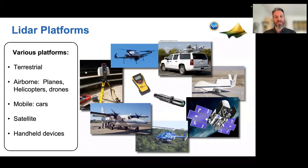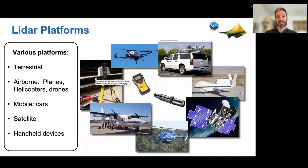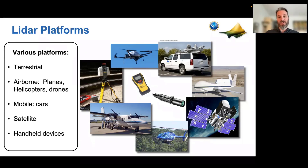LIDAR is pretty ubiquitous these days. You can find it on a variety of platforms — everything from drones, cars, satellites, and helicopters. Most of the data in Open Topography is based on low-to-mid-altitude aircraft collections, but we also have a fair amount of terrestrial laser scanning, referred to as TLS, where a LIDAR system is placed on a tripod and scans the near surface. You're even starting to see LIDAR in tape measures and range finders, so it's become quite ubiquitous in the field.